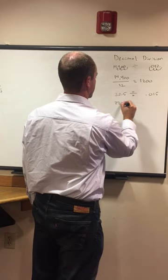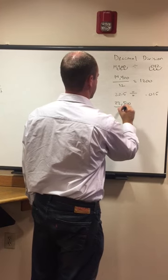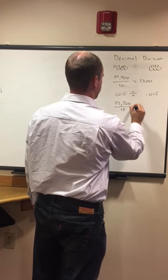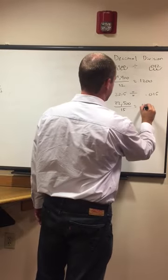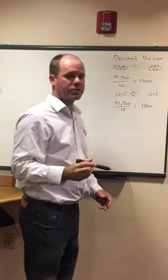And then we would have 22,500 divided by 15, and as you divide that, we find that answer is 1,500. That's how you do it.